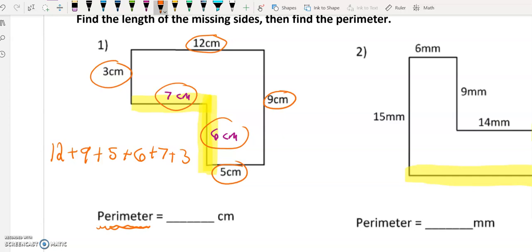Therefore, I add them together. Let me grab a calculator. We got 12 plus 9 plus 5 plus 6 plus 7 plus 3 gives us a grand total of 42 centimeters.